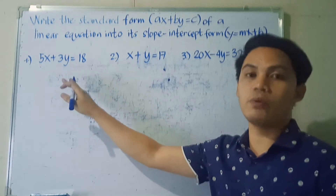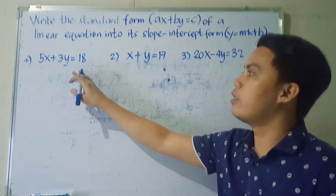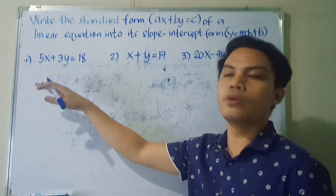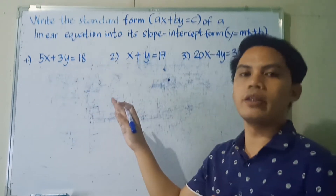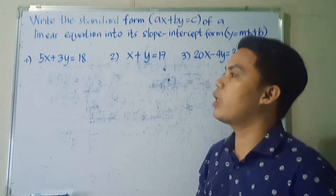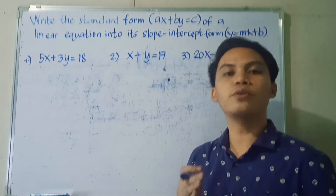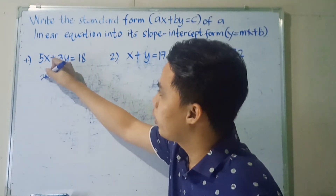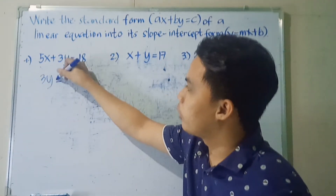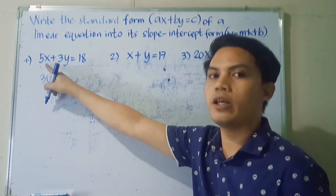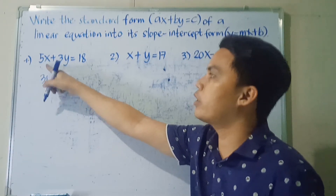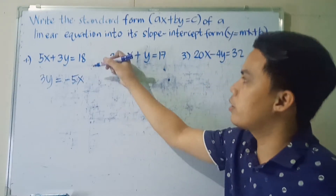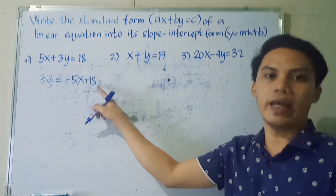First example: we have 5X plus 3Y is equal to 18. What we're going to do first is transpose the term with variable X to the right side of the equation, so that only the term with variable Y remains on the left side. So we bring down 3Y equals, and we transpose 5X to the right side.